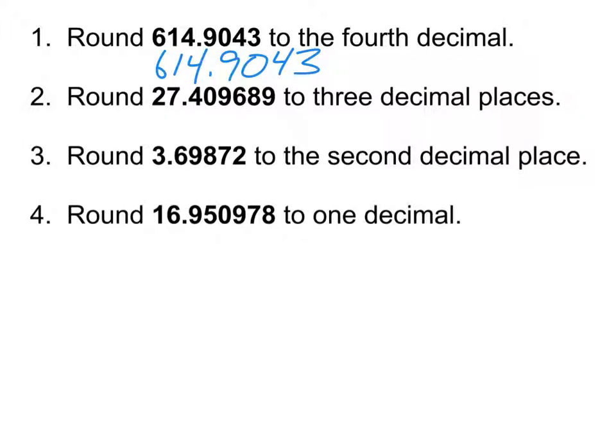All right, next one. We're rounding to three decimal places. So that means we're rounding to where the nine is. So that tells me I'm going to start with 27.40, and the question is, is it going to be a nine or does it become ten? Is it closer to nine or ten?